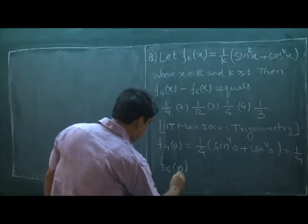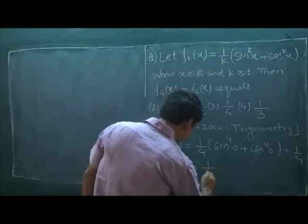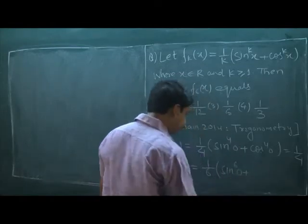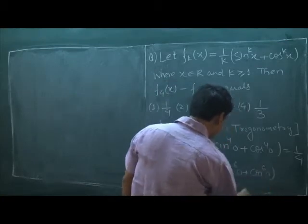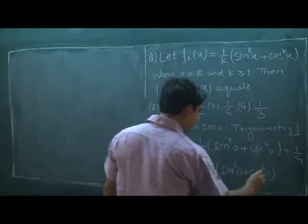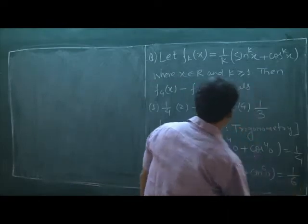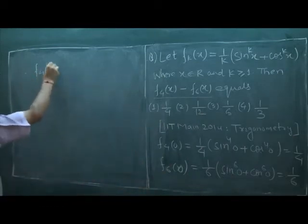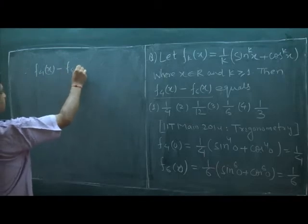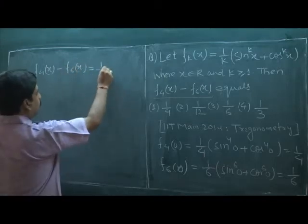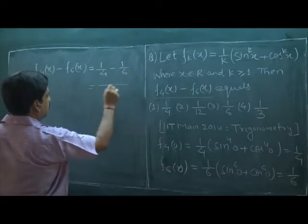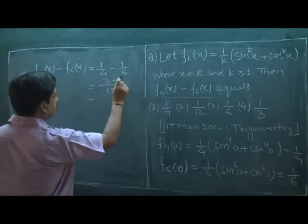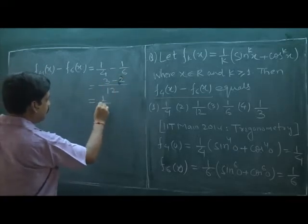Similarly, f6(0) is 1 by 6 times sin to the power 6 of 0 plus cos to the power 6 of 0. This is 0 plus 1, which is 1 by 6. Hence, the requirement is f4 minus f6, which is 1 by 4 minus 1 by 6. LCM is 12, giving 3 minus 2, which is 1 by 12.